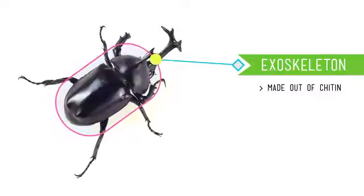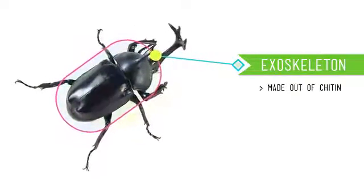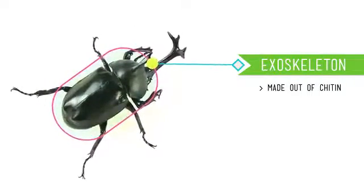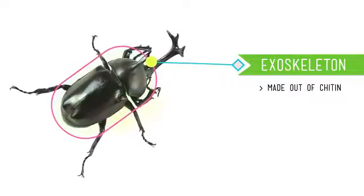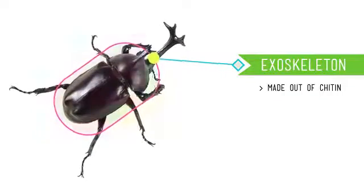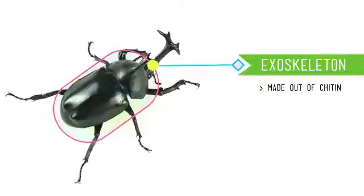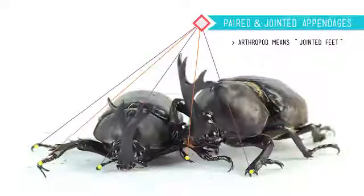Two, all arthropods have an exoskeleton, a hard outer shell made out of chitin, which is a really tough carbohydrate that's chemically similar to the cellulose that you find in plants. And in order to grow bigger, they actually have to shed it. And be glad that you don't have to do that because it looks like kind of a traumatic experience for them.